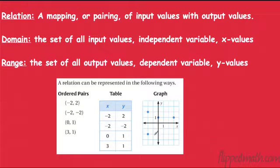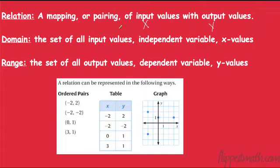A relation is just a mapping or pairing of input values with output values. We think of input values as our x's and output values as our y's. When we put something in, we get something out — that's a relation. A domain is a set of all input values, the independent variables, also known as the x value.